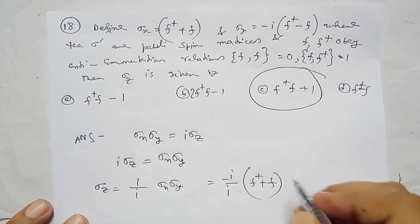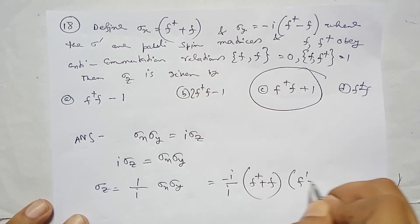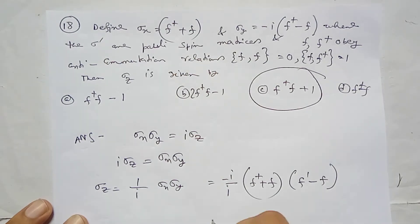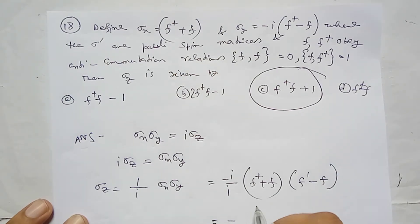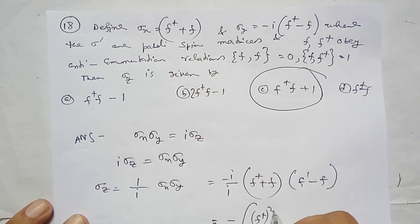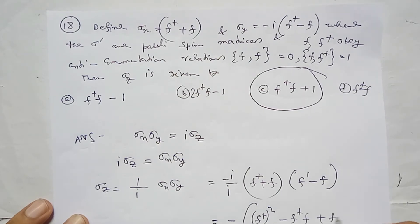Times i f dagger minus i f. This expands to minus the whole of i f dagger squared minus i f dagger f plus f dagger i f minus i f squared.